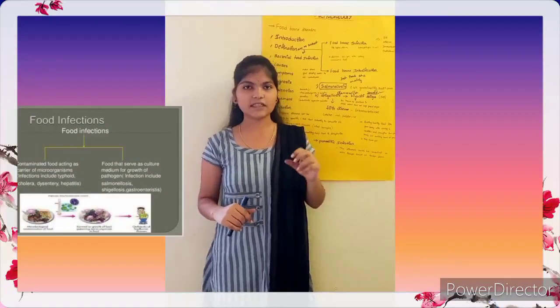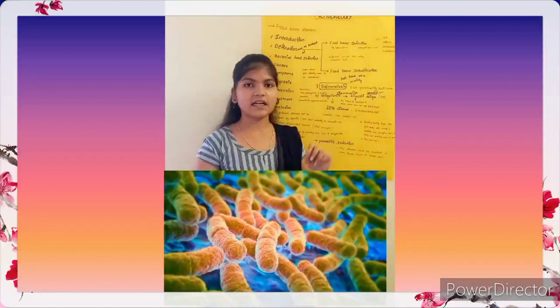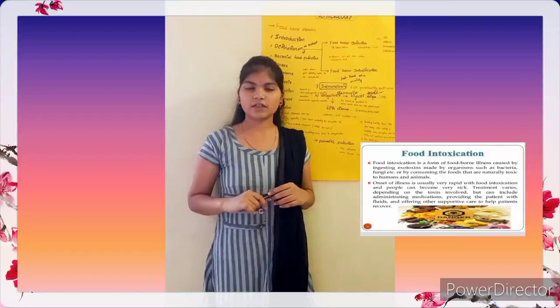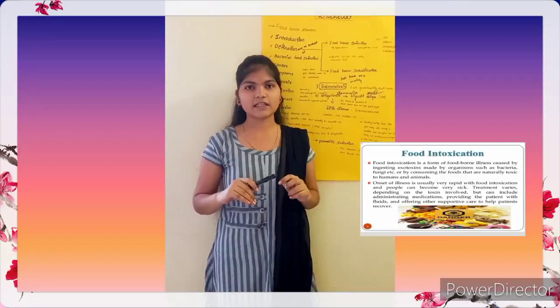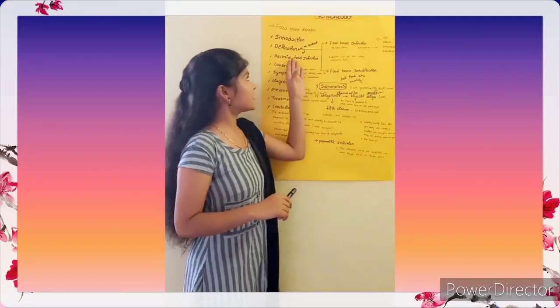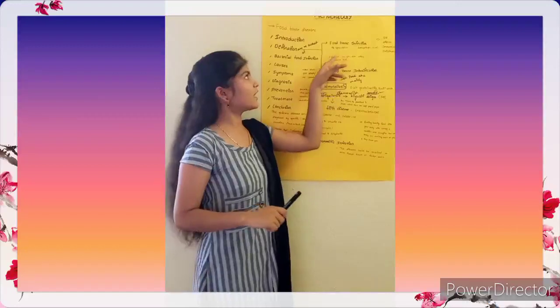The second type of foodborne infection is when food is contaminated with microorganisms and can serve as a culture medium for the growth of pathogens. Examples include enteropathogenic E. coli. Foodborne intoxication is caused by the ingestion of microorganisms along with enterotoxins, or by consuming toxins produced by bacteria or fungi, or by consuming natural foods that are toxic to humans and animals. Foodborne intoxication and foodborne infection are the two types of foodborne diseases.